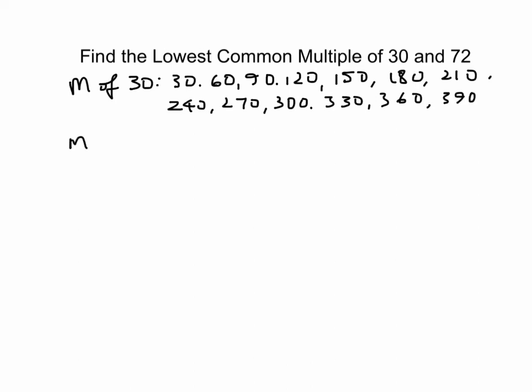And then you look at the multiples of 72. So you've got 72, 144, 216, 288, add 72 to that, that's 360. And you can stop there because you've spotted that that's the same number in both lists.